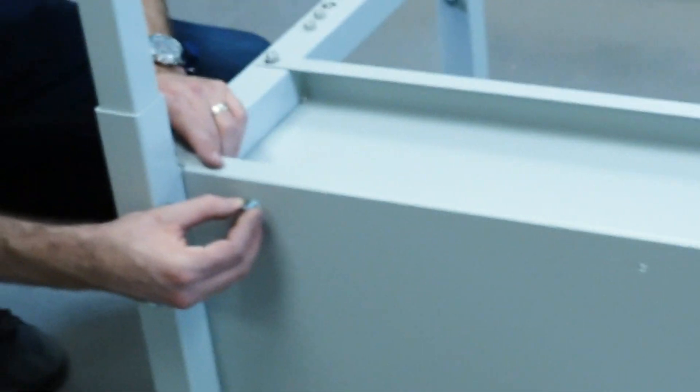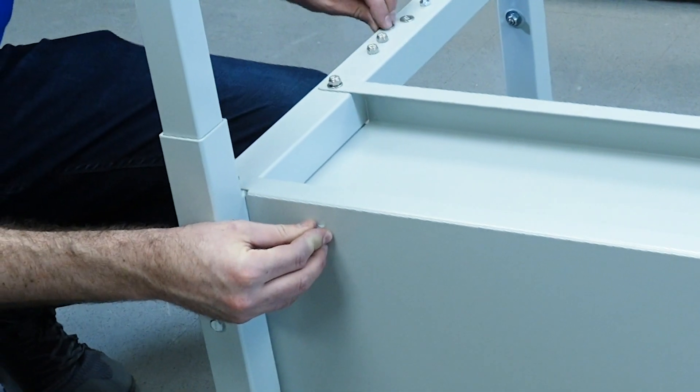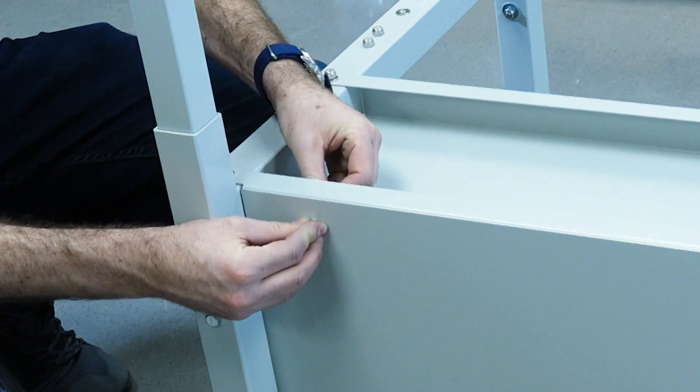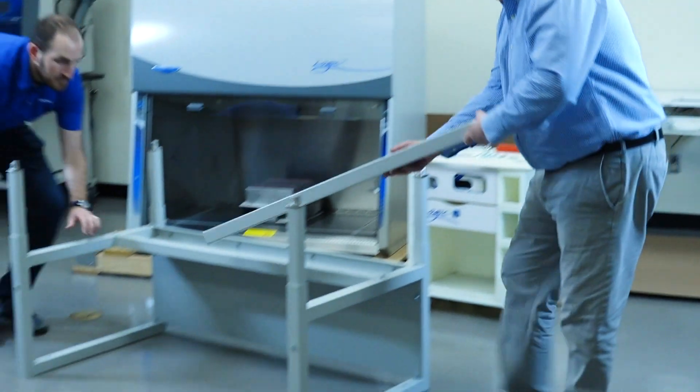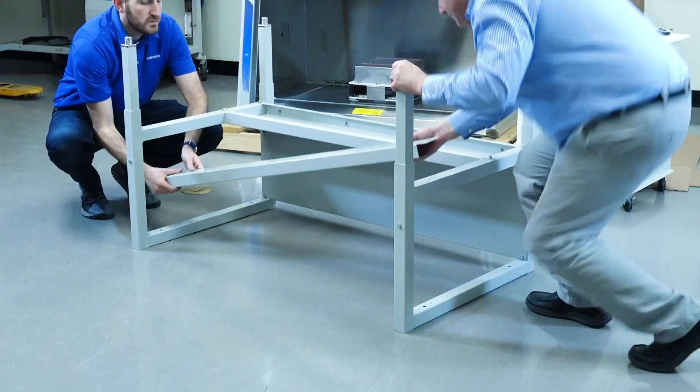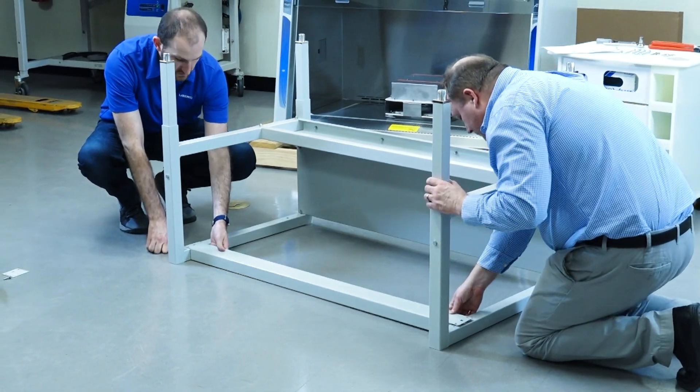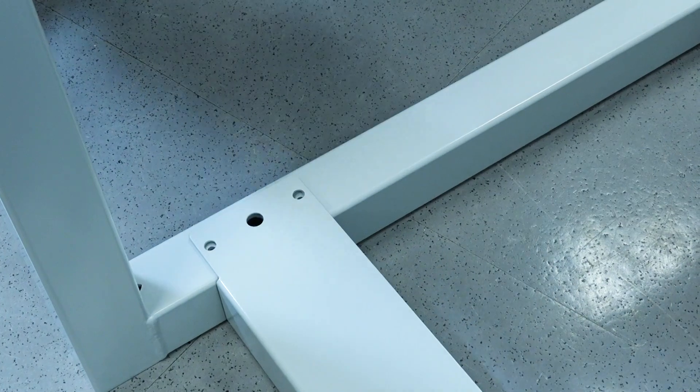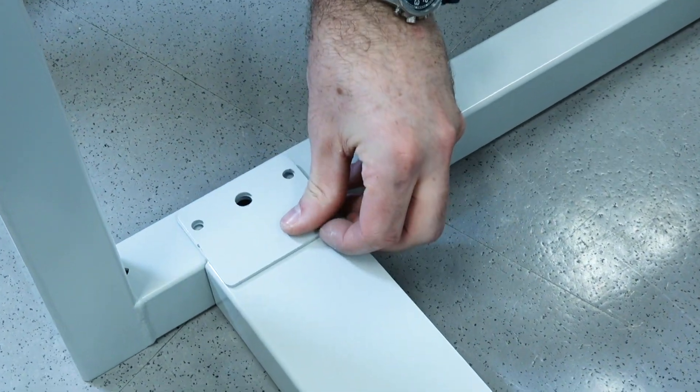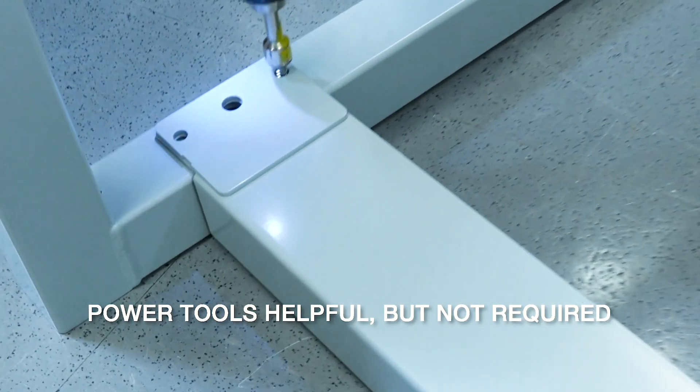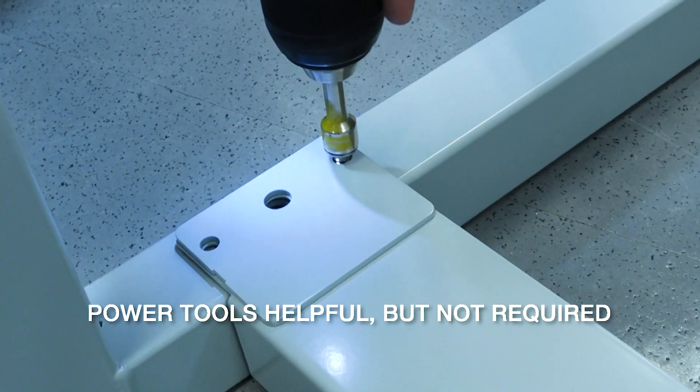Next, attach the top support plates to the underside of the assemblies using the four included self-tapping screws. Ensure that the screws are straight as you tighten the top support to the base stand. Complete the stand by tightening all the bolts before you turn it upright.